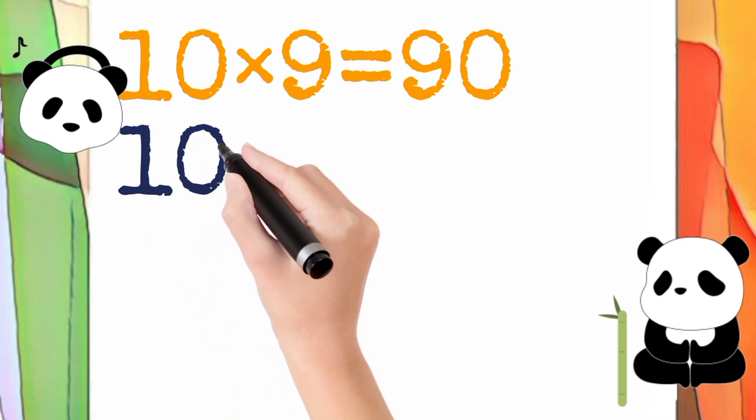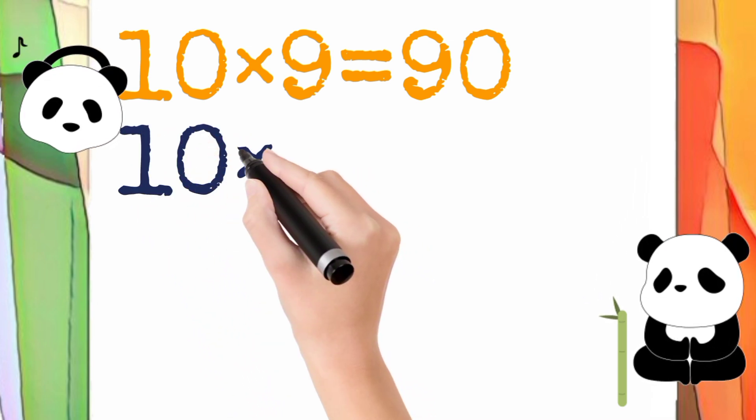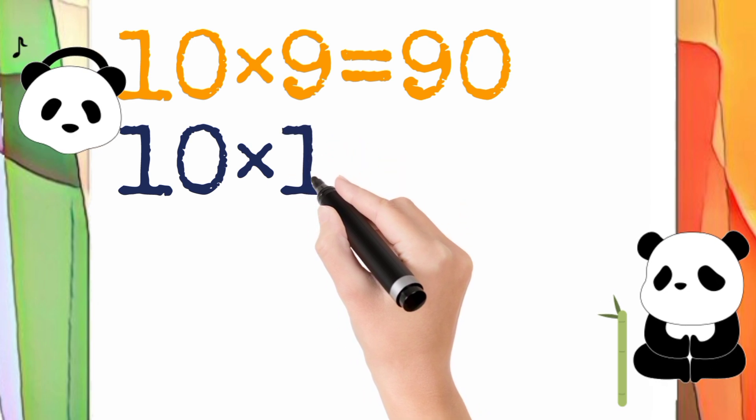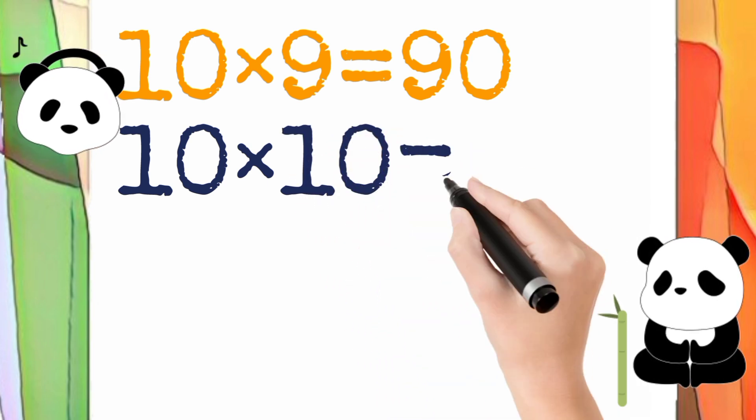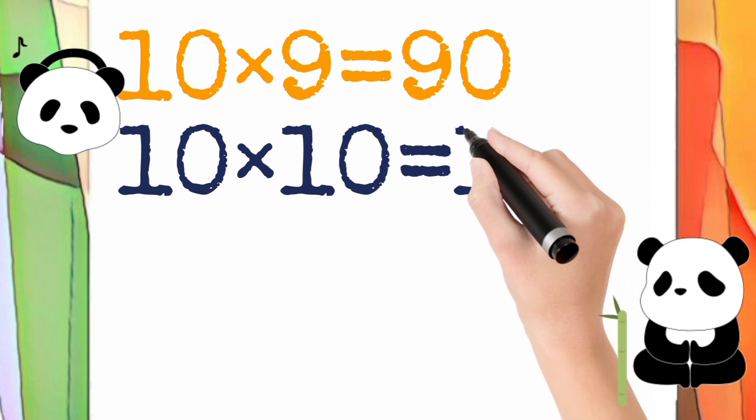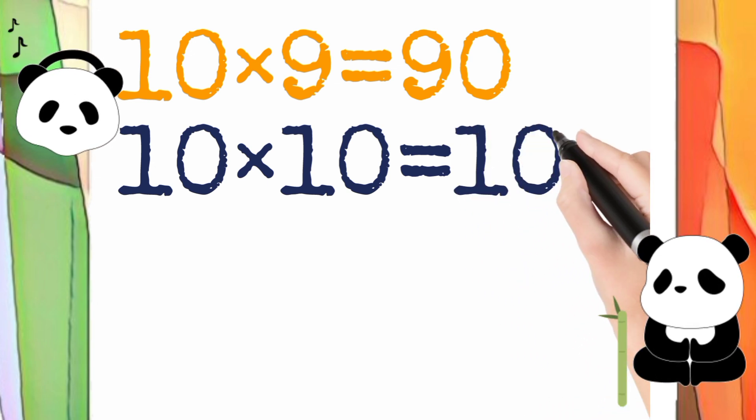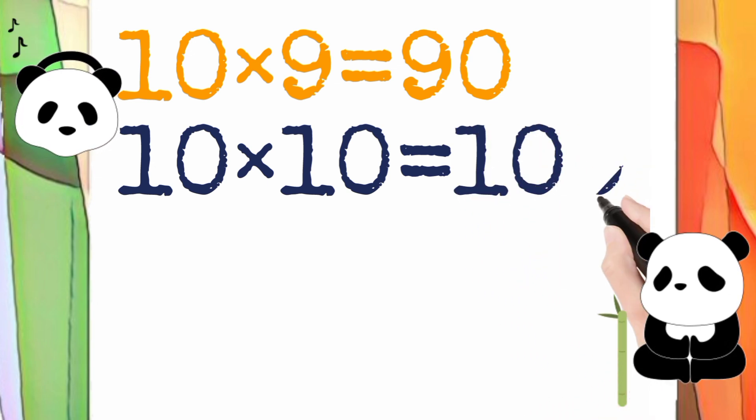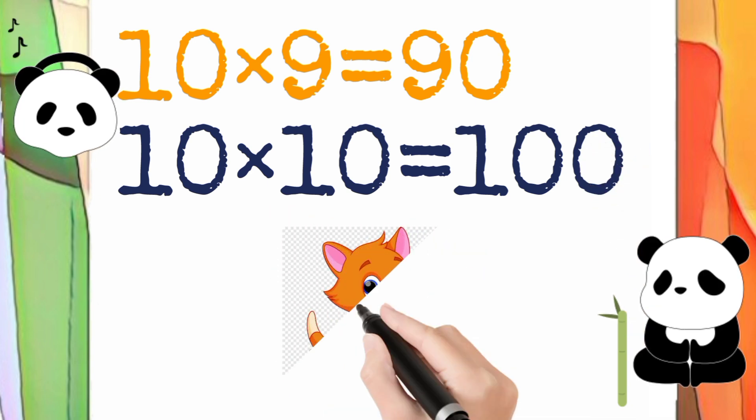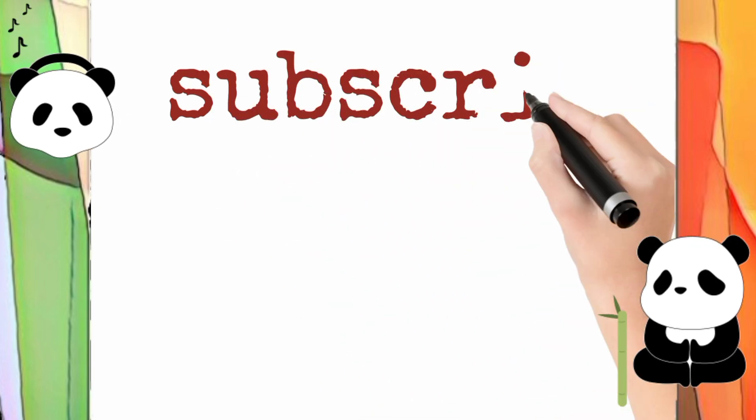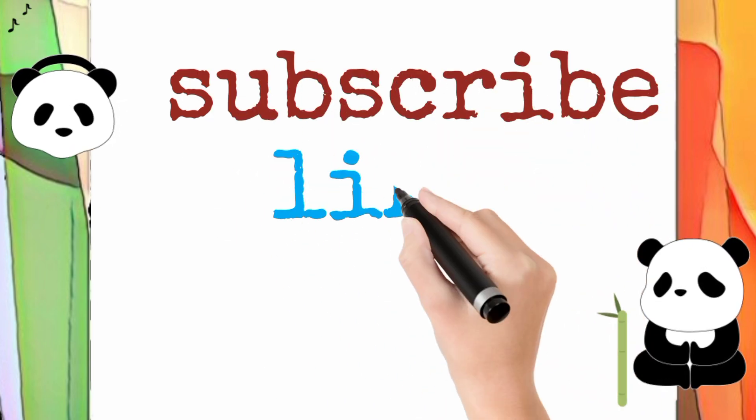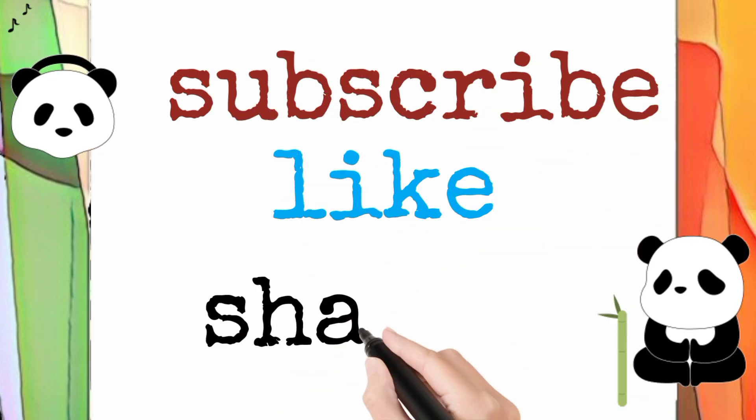10 multiply by 10 is equal to 100. So 10 times 10 equals 100. It's completed. I hope this video is informative for you, so subscribe my channel, like this video and share. Thank you for watching.